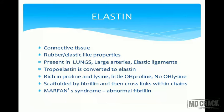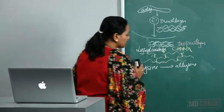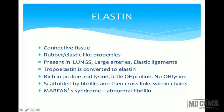Now we move to another connective tissue protein: elastin. Elastin is not as complicated as collagen. It is a connective tissue with rubber-like or elastic properties, hence the name elastin. It is present wherever a tissue has to expand — in tissues like the lung (which expands during inspiration), in large arteries like the aorta (which must expand), and in elastic ligaments.